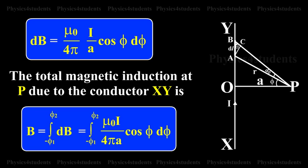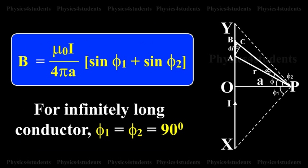The total magnetic induction at P due to the conductor is B equals integral from -φ1 to +φ2 of dB equals integral from -φ1 to +φ2 of μ0 times I by 4πA times cos φ dφ. B equals μ0 times I by 4πA times (sin φ1 + sin φ2).